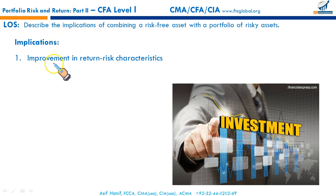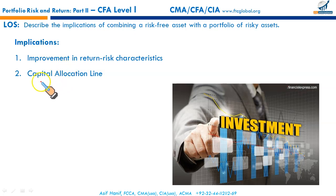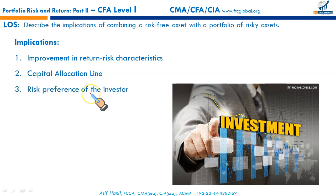When we combine a portfolio of risky assets with a risk-free asset, we can improve the return-risk characteristic of the portfolio, resulting in a better trade-off. The combination of risky assets with the risk-free rate results in what we call the capital allocation line, which we discussed in detail in the previous reading. How the investor would allocate assets — the proportion to risky assets versus the risk-free asset — will be entirely dependent on the risk preferences of the investor.